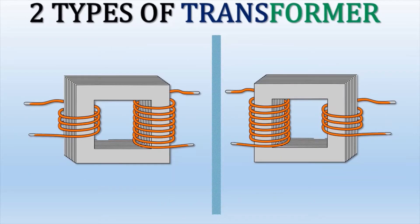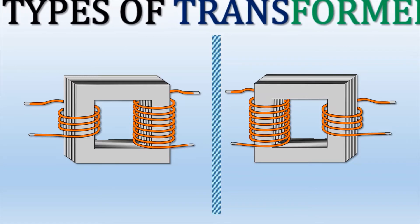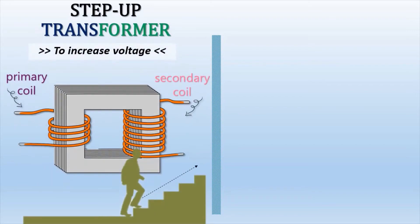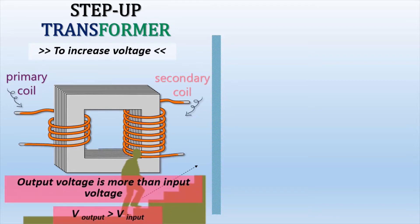There are two types of Transformers, categorized on the basis of the number of turns in the primary and secondary coils. A Step-Up Transformer transforms a low voltage into a high voltage. In this type of Transformer, the number of turns in the secondary coil is greater than the number of turns in the primary coil. If V output is greater than V input, the voltage is raised on the output side and it is known as a Step-Up Transformer.